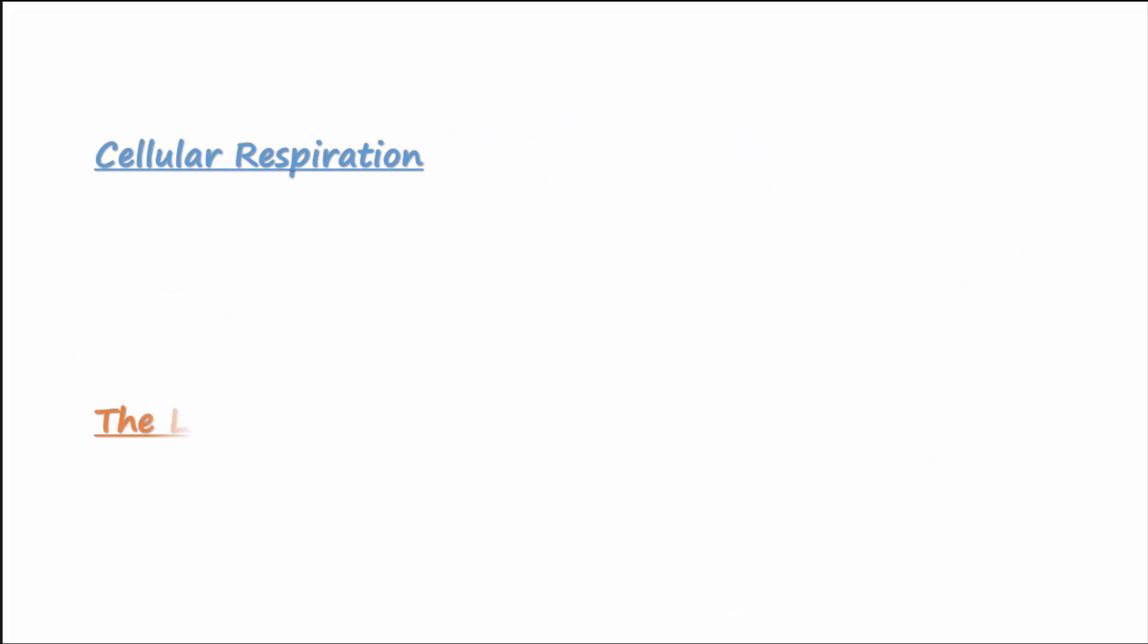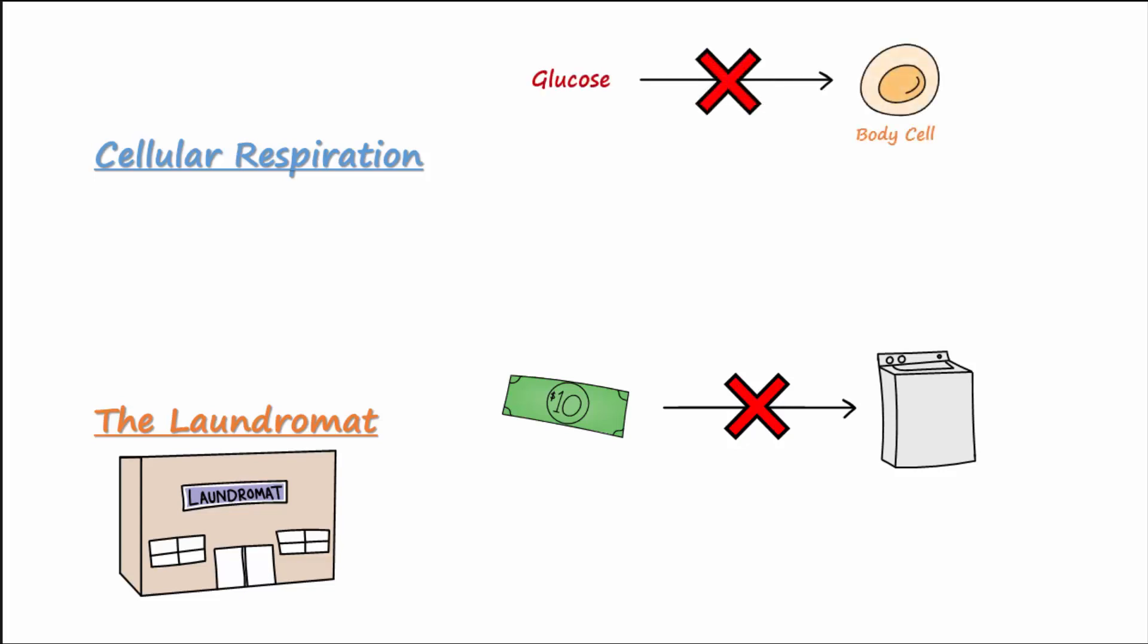Let's compare cellular respiration to what happens at the laundromat. You walk into the laundromat and there are washing machines. You only have a ten dollar bill. The washing machines don't take ten dollar bills, just like our cells can't use glucose directly for cellular processes. First, we have to convert the ten dollar bill into quarters at the change machine. The change machine will spit out quarters, just like cellular respiration spits out ATP.